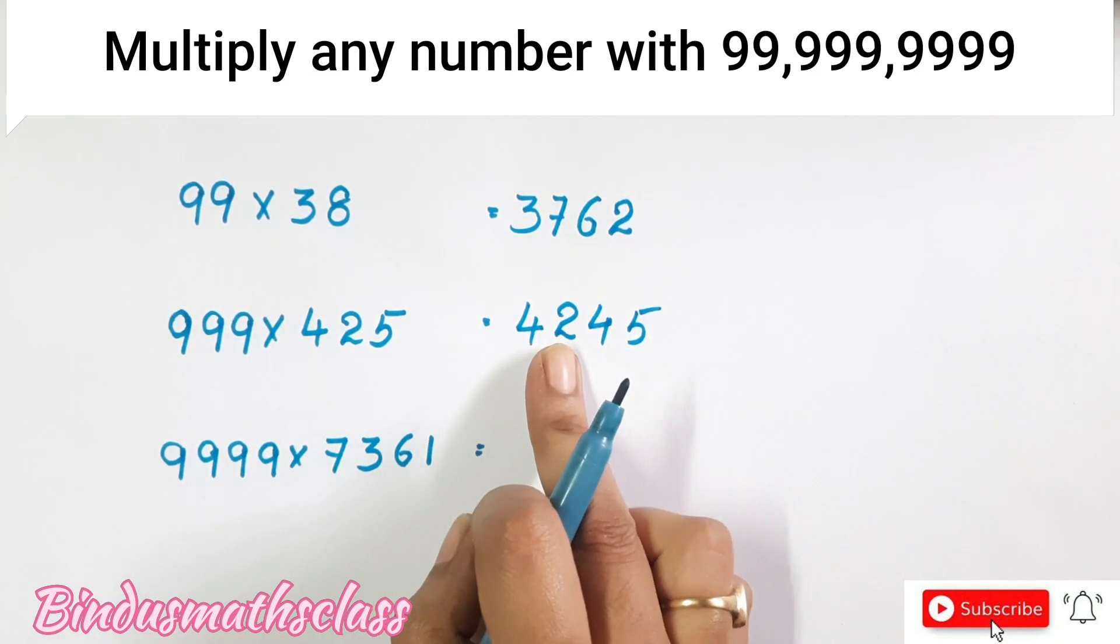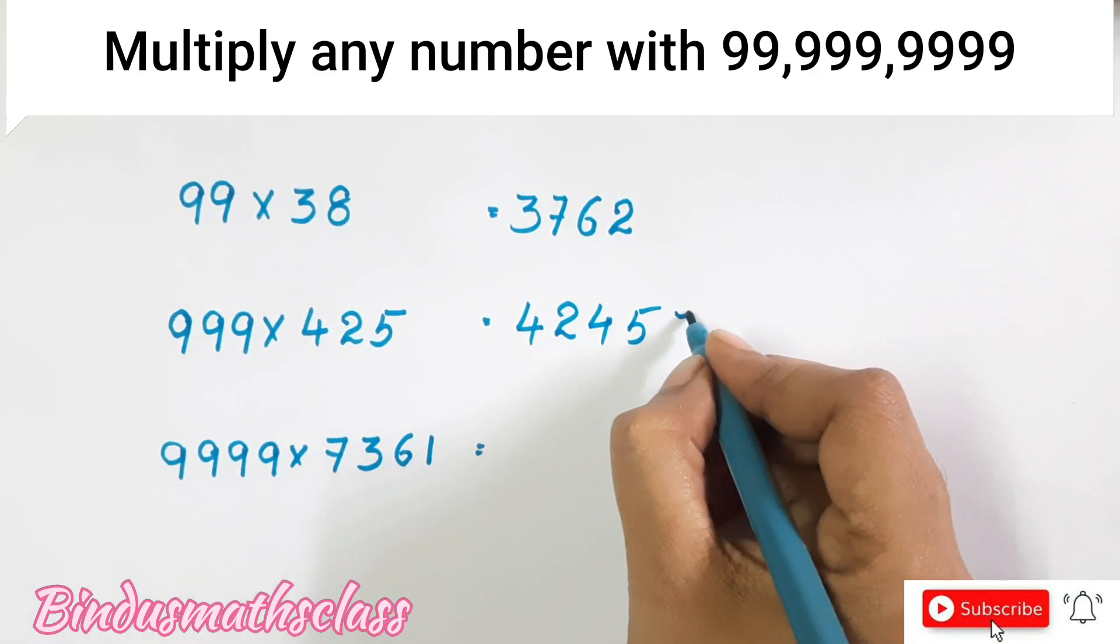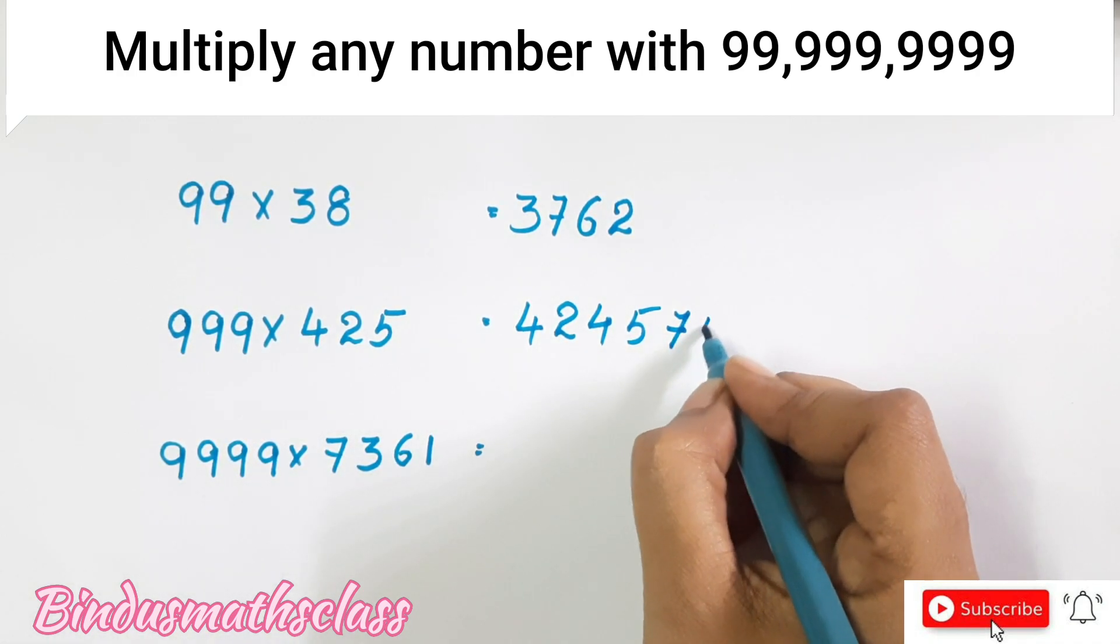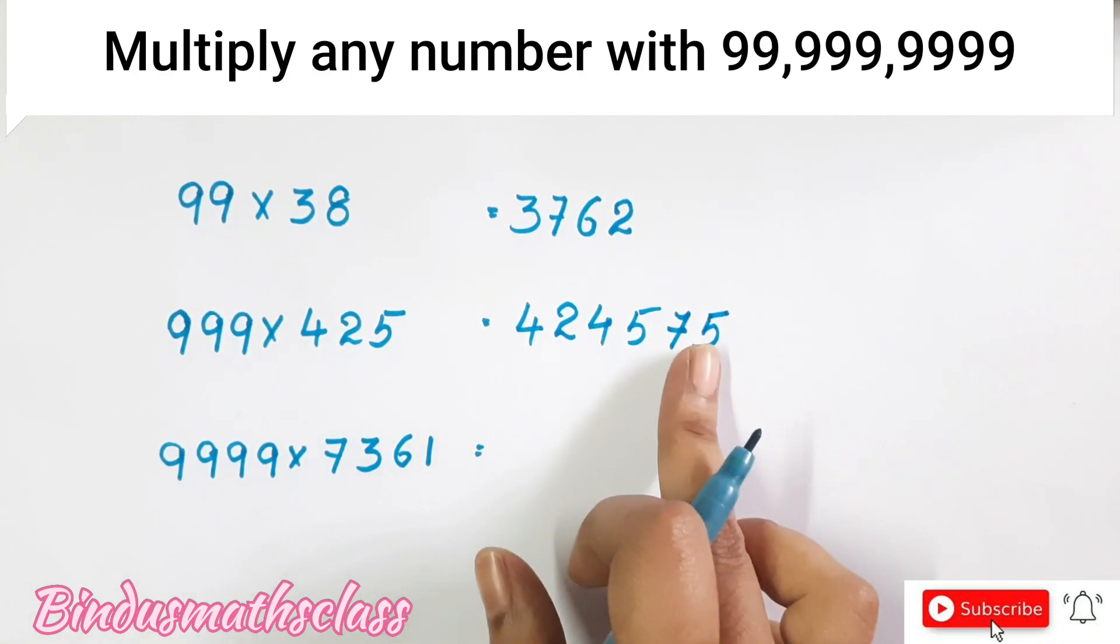Here if we add 7, we will get 9. Then write 7. Here we have to add again 4. Means write 5. So 4 plus 5 is 9. And your answer is 424575.